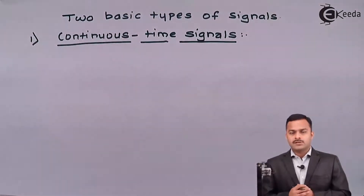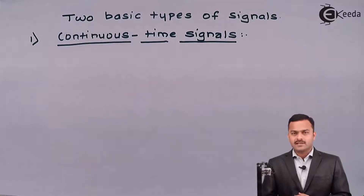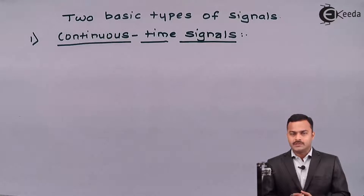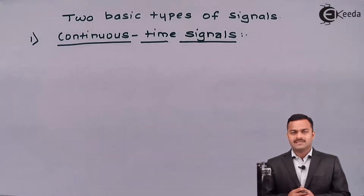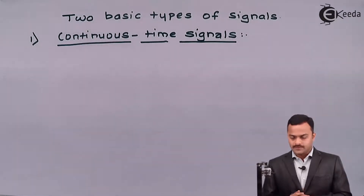Let me explain continuous time signals. In the case of continuous time signals, the independent variable is continuous, hence the variable which depends upon this will have continuum values.